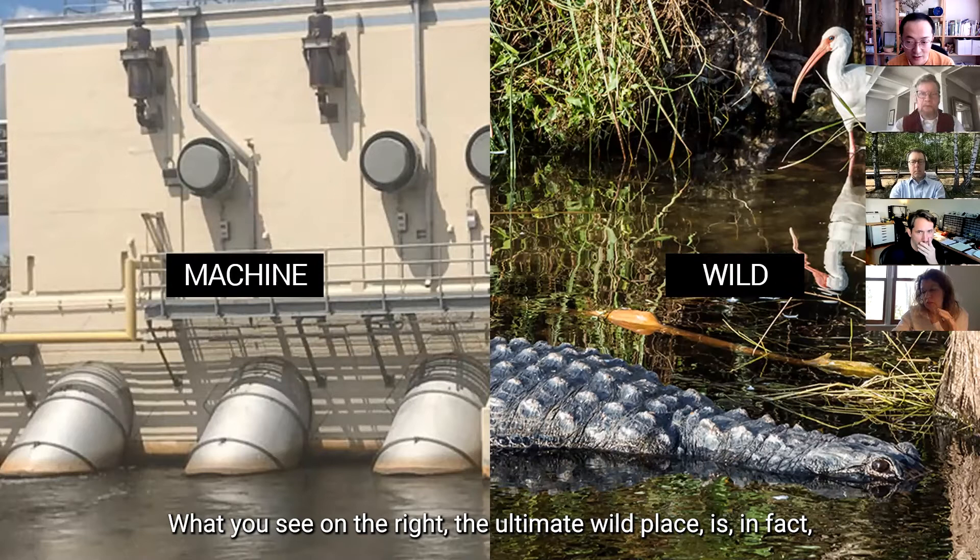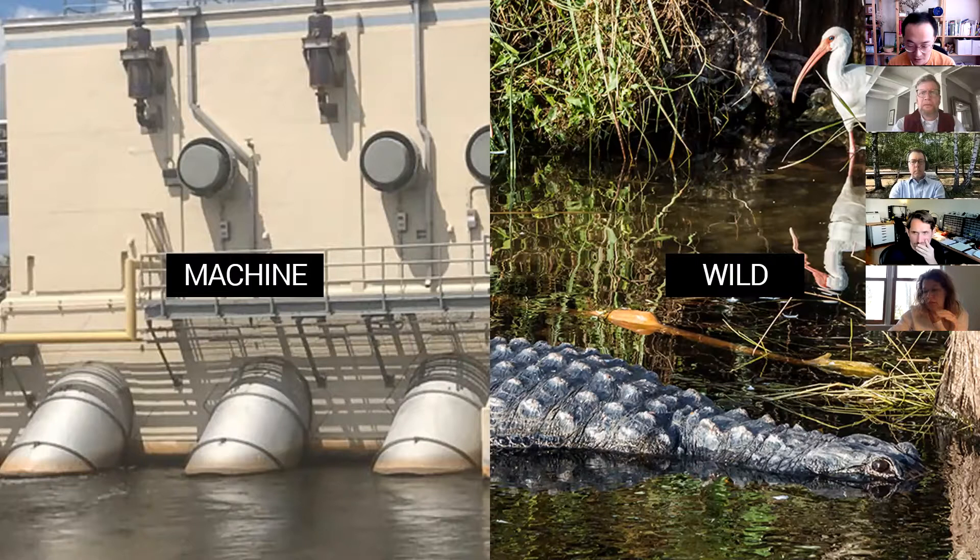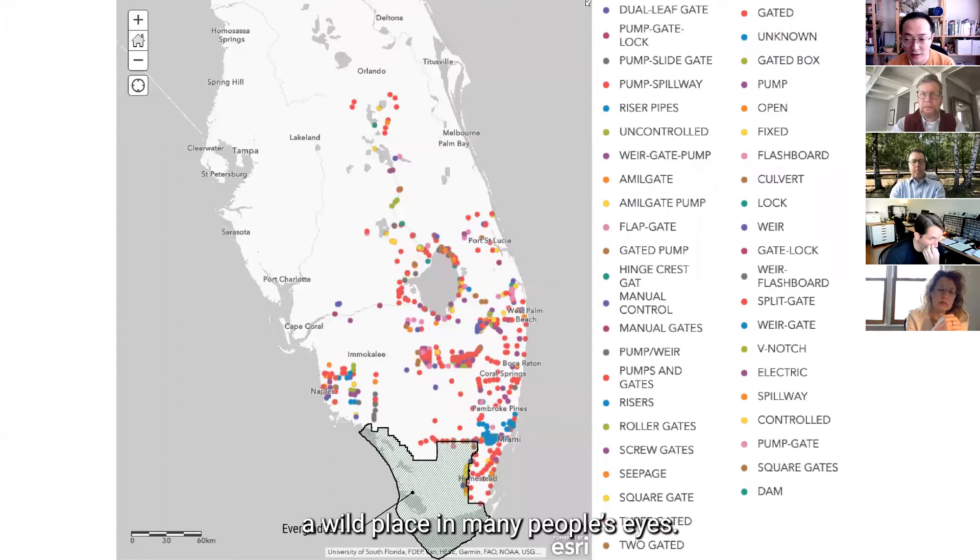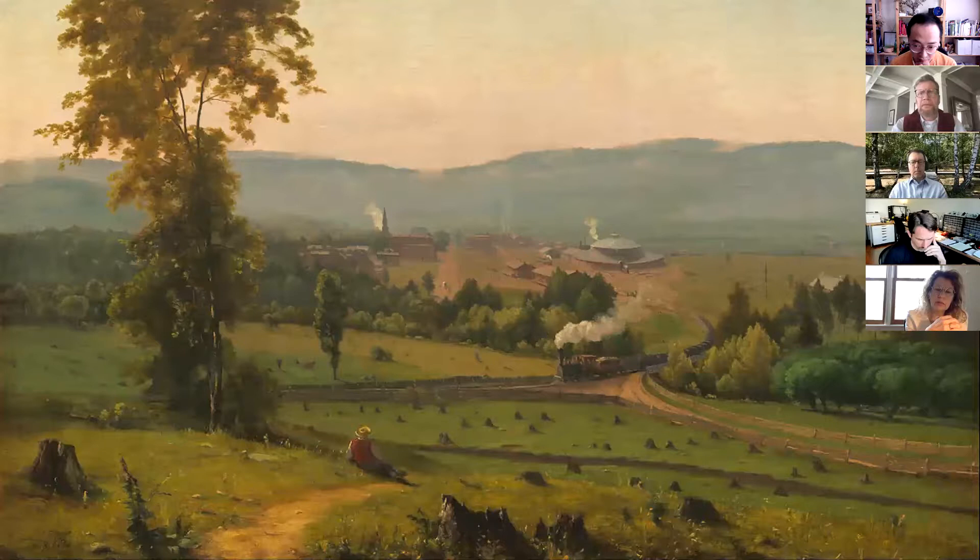And what you see on the right, the ultimate wild place, is in fact carefully maintained by distributed actuators across the South Florida landscape. And this map shows the distributed machines that carefully calculate, simulate, and regulate what is going in and out of Everglades, a wild place in many people's eyes. Our categorical language falls short when facing this entangled reality.